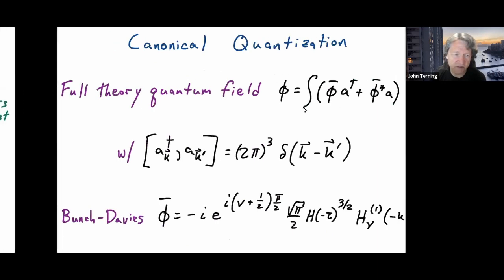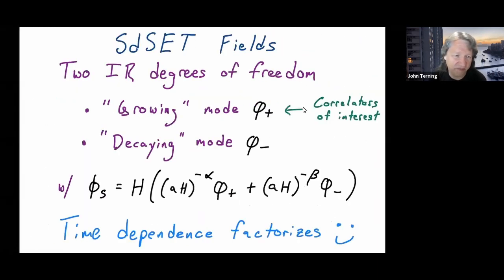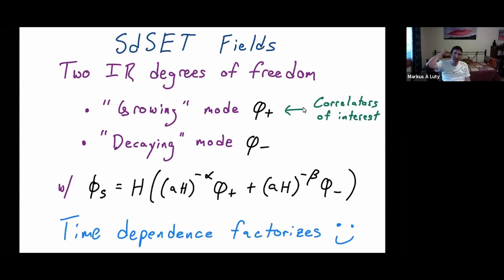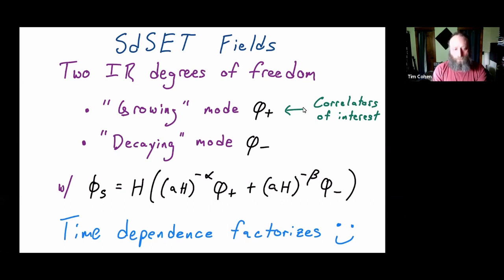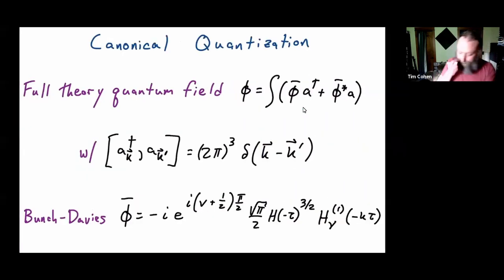Audience: So in this big equation at the bottom, I should think of phi-plus and phi-minus as constants — this is the leading order solution where I neglect the K dependence. And now phi-plus and phi-minus are going to become slowly varying corrections on top of that. Is that a correct picture? Tim: Yes, absolutely.